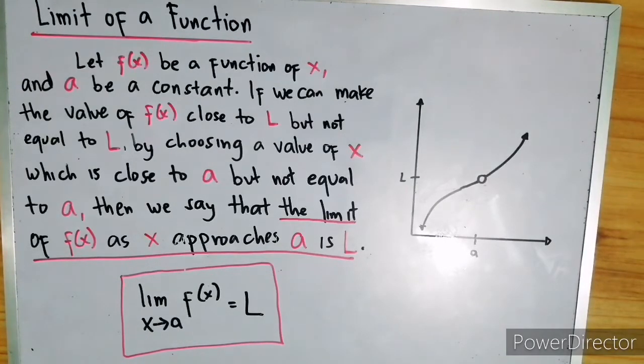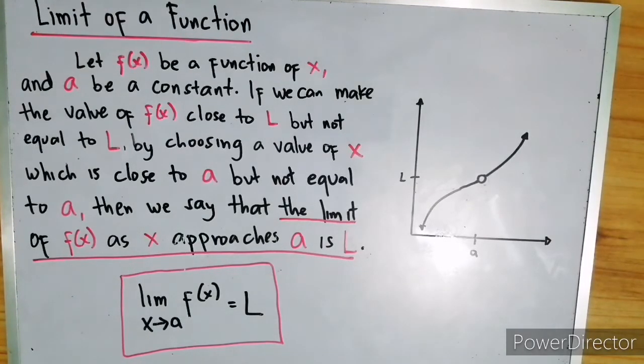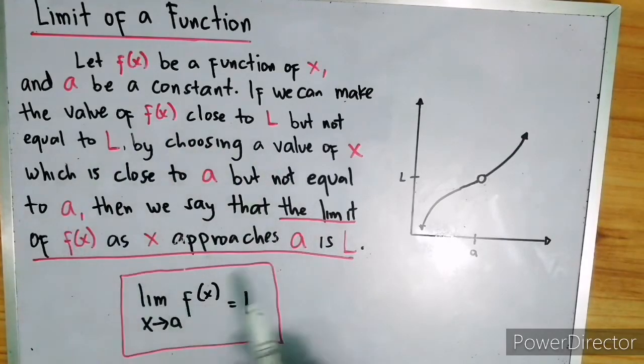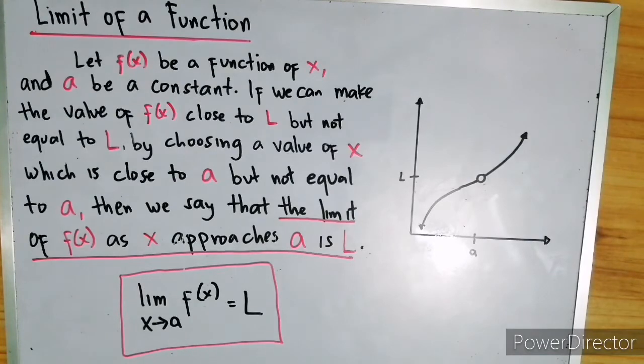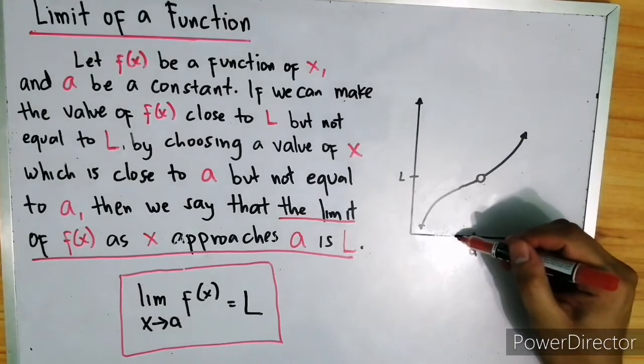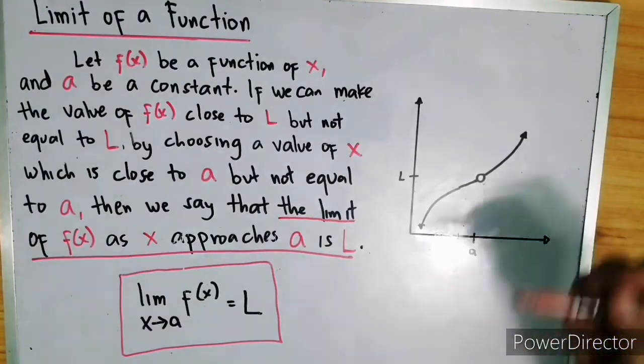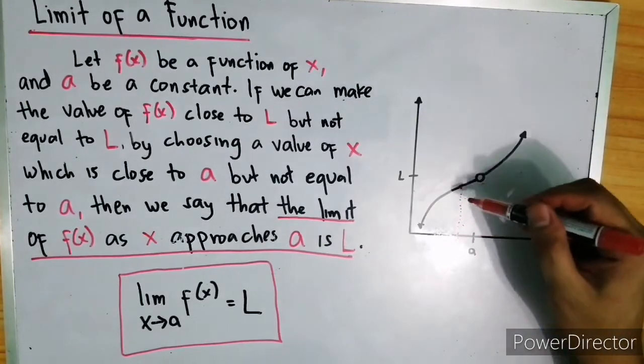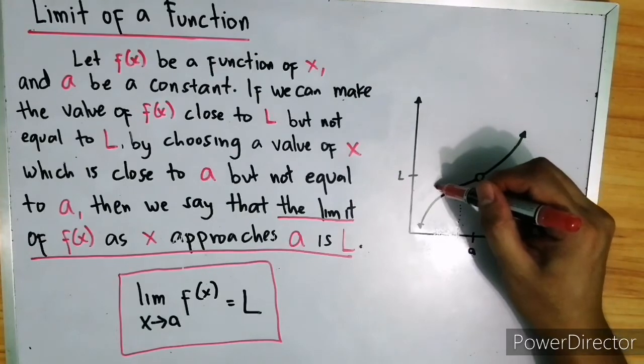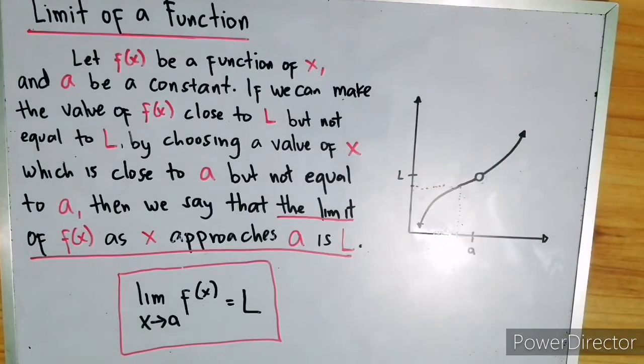Now, to understand it better, let's have this illustration. This definition only says that if we choose a number close to a but not equal to a, let's say we have this one, then the function will give us a number or a value which is close to L but not equal to L.